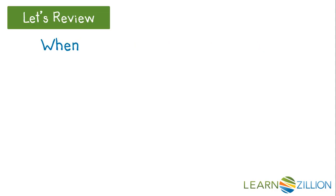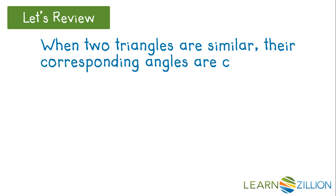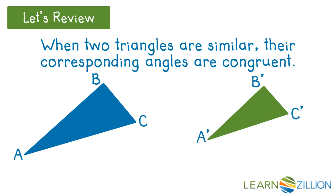Let's review. When two triangles are similar, their corresponding angles are congruent. So in these two triangles, angle A is congruent to angle A prime, B congruent to B prime, and angle C congruent to angle C prime, which also means that their measures are equal. So the measure of angle A is equal to the measure of angle A prime, and so on.